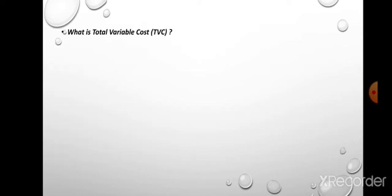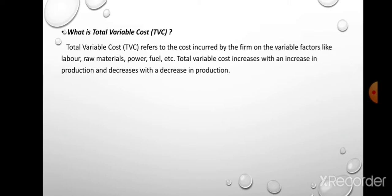What is total variable cost? Total variable cost refers to the cost incurred by the firm on variable factors like labor, raw materials, power, fuel, etc. Labor is a variable factor. Raw materials, power, fuel, and transport are all variable factors. If you produce more of a good, more laborers, more raw materials, more power, more fuel, and more transport facilities are required. If the producer produces a small amount, it uses small amounts of all these. So total variable cost depends on the amount of production.